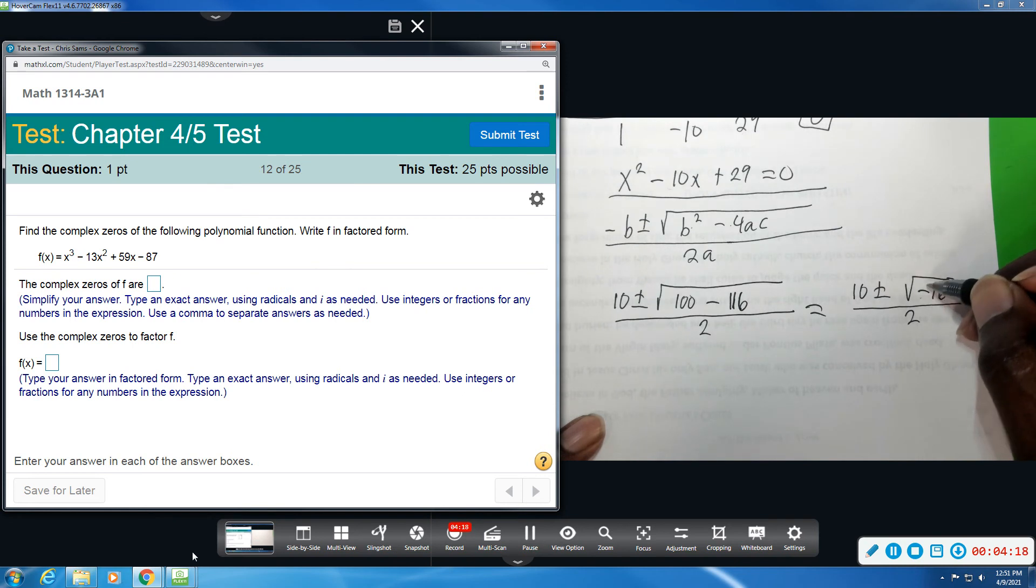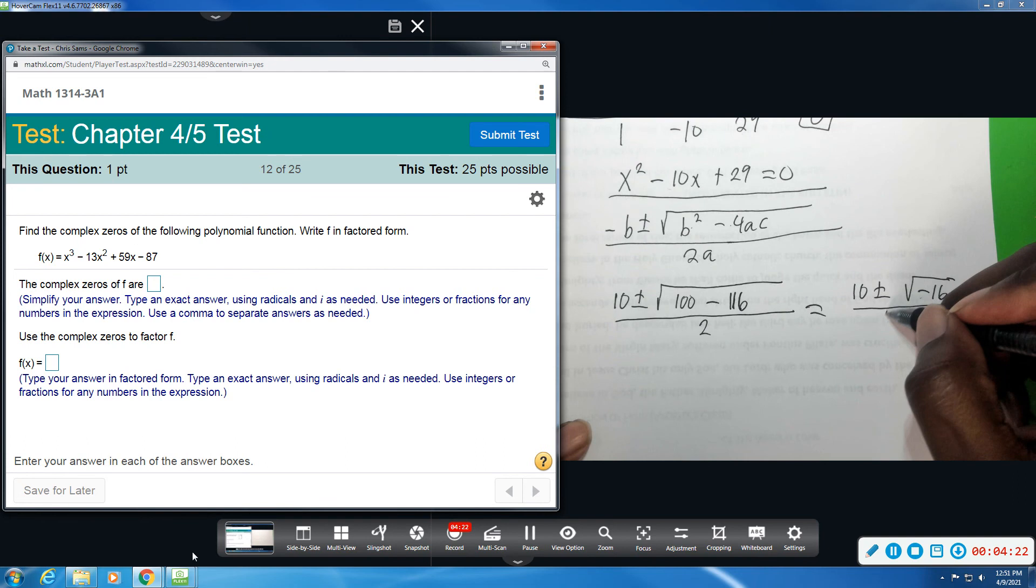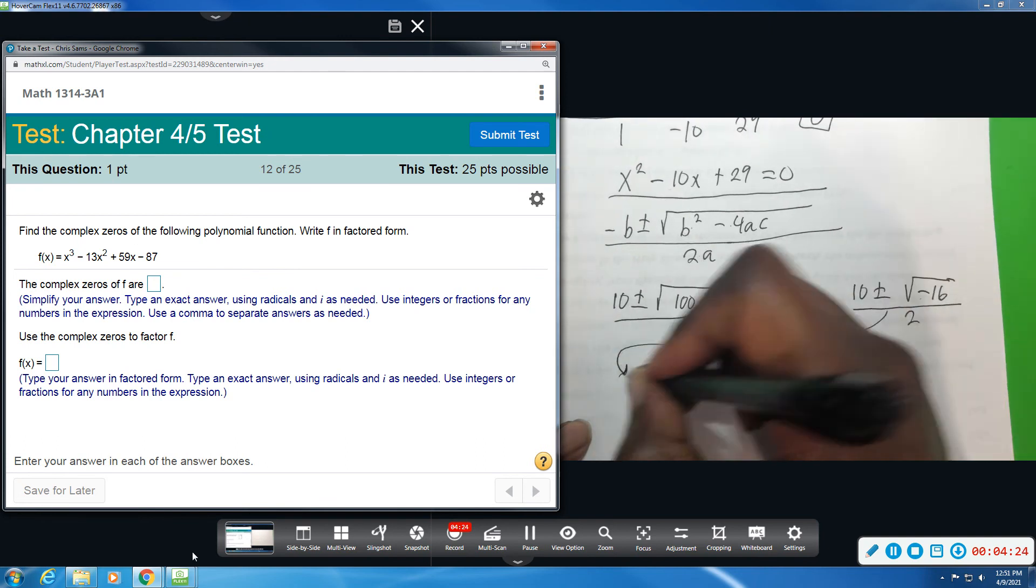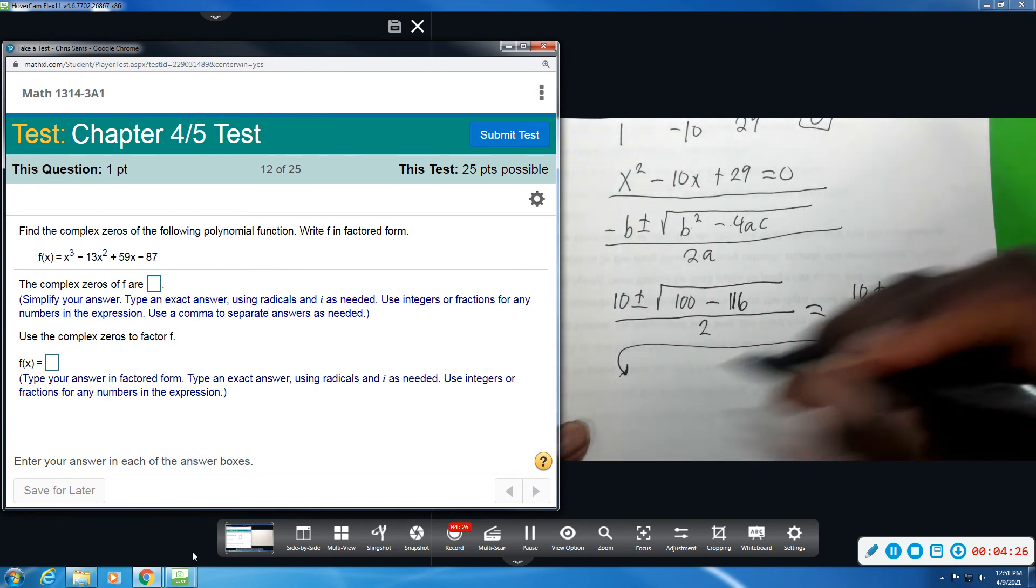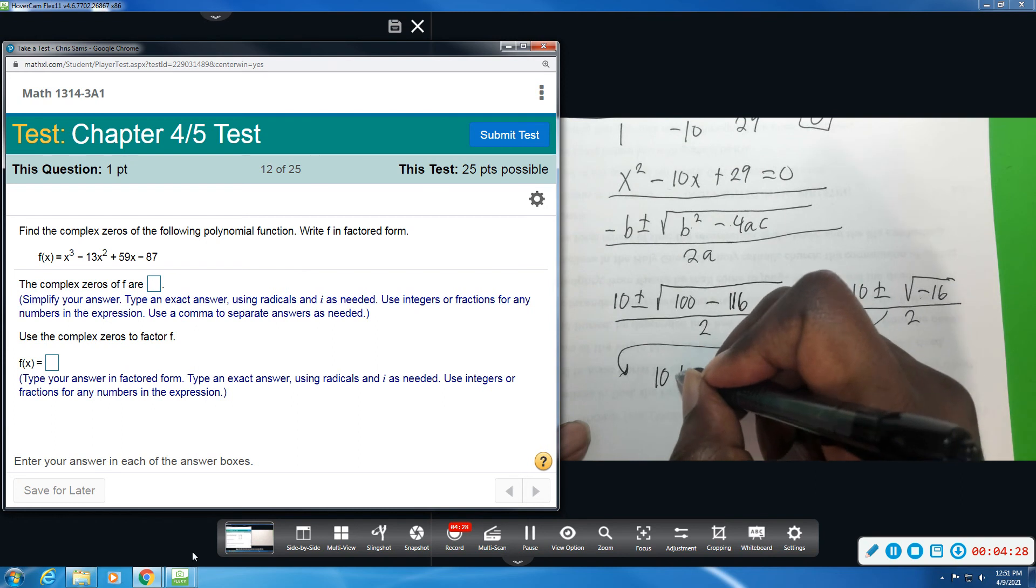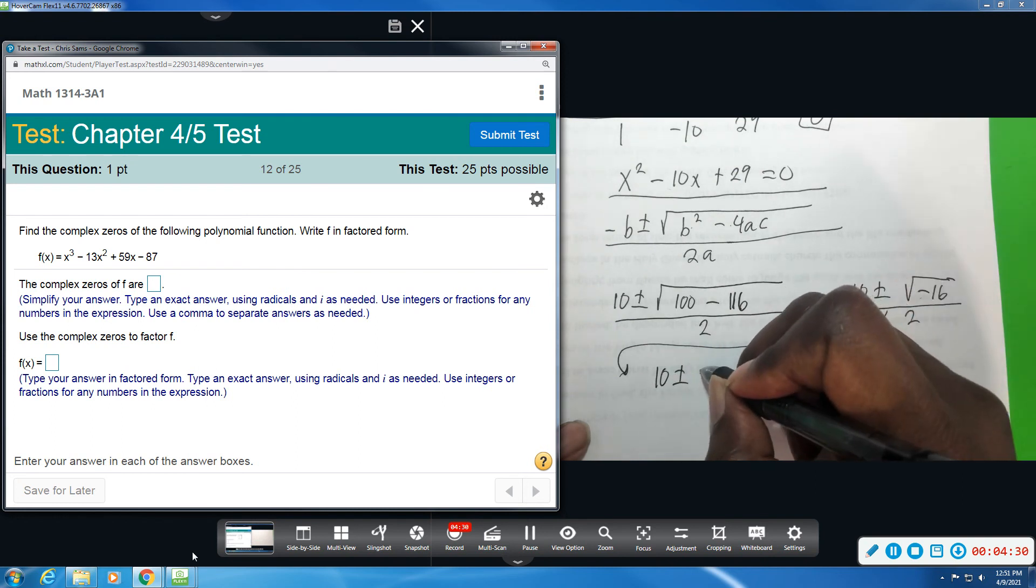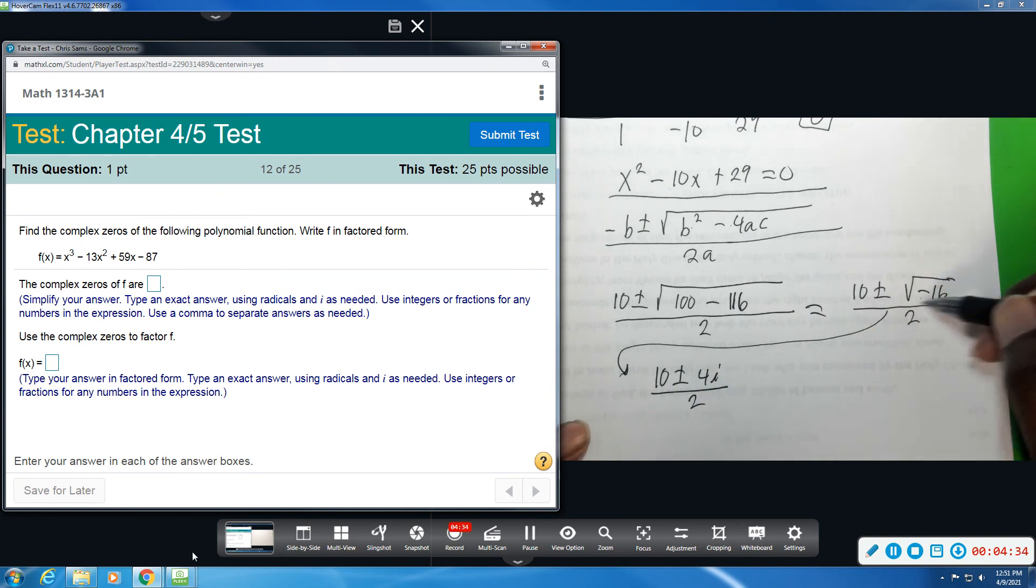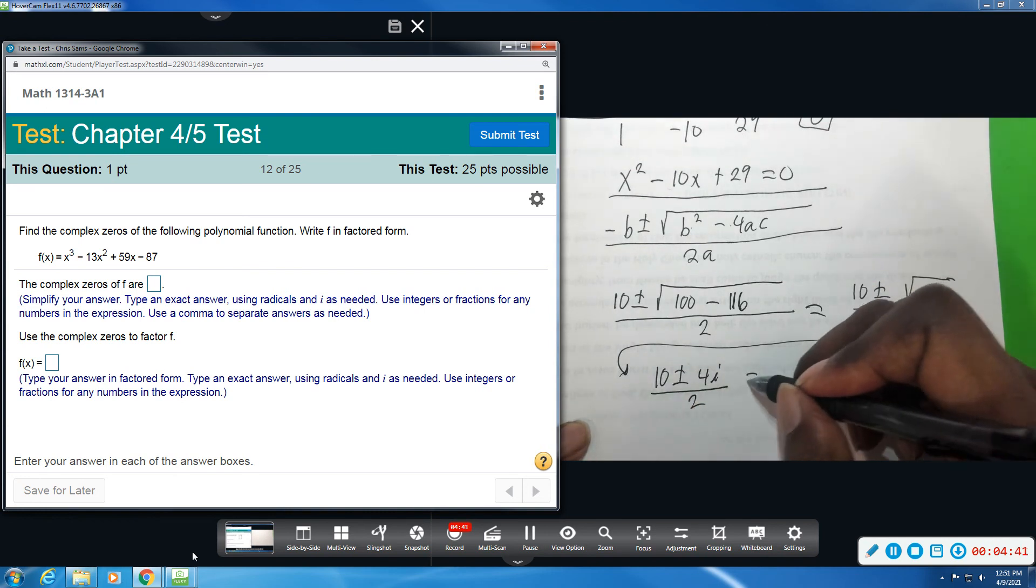The negative makes it imaginary. The square root of 16 is 4. So I'm wrapping around, coming down on this side. But this gives me 10 ± 4i divided by 2. And again, the 4i comes from the square root of 16 is 4. But because it's negative, you get imaginary.